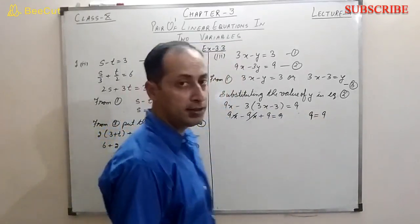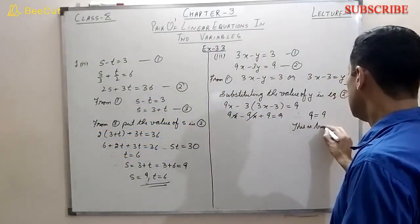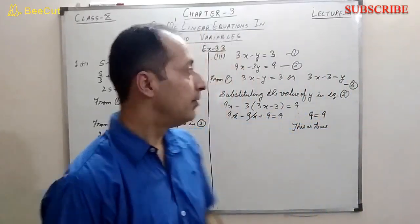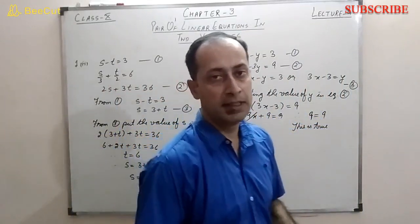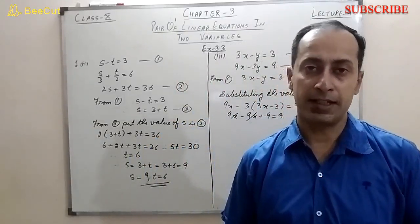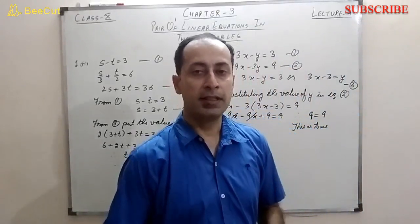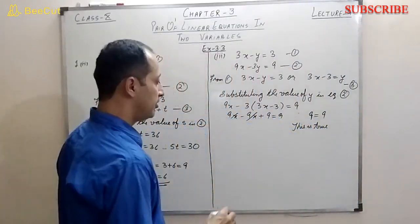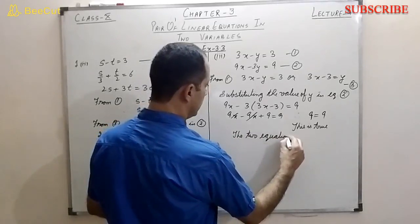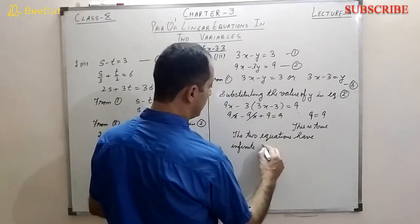We get 9 equals 9, which is always true. The reason we have not got a unique solution is that if you compare the ratios of coefficients, a1 by a2 equals b1 by b2 equals c1 by c2. In that case we get infinitely many solutions. So just write: the two equations have infinitely many solutions.